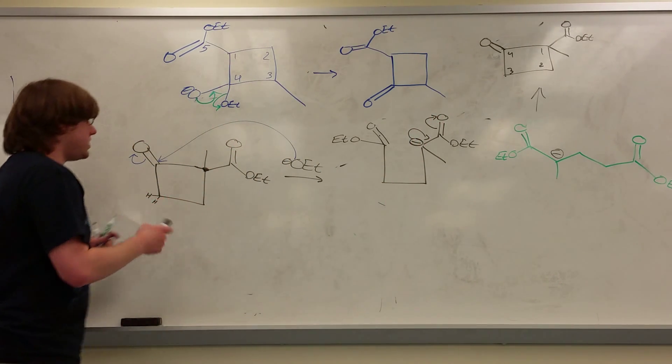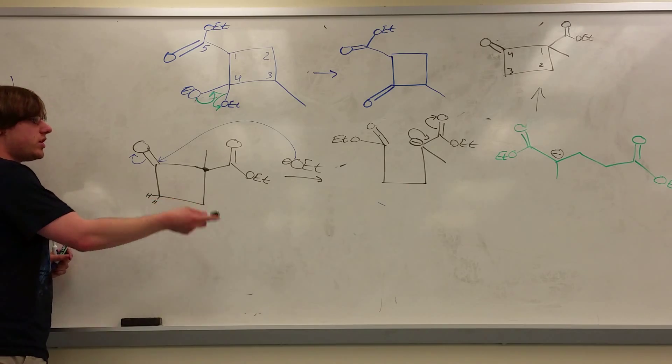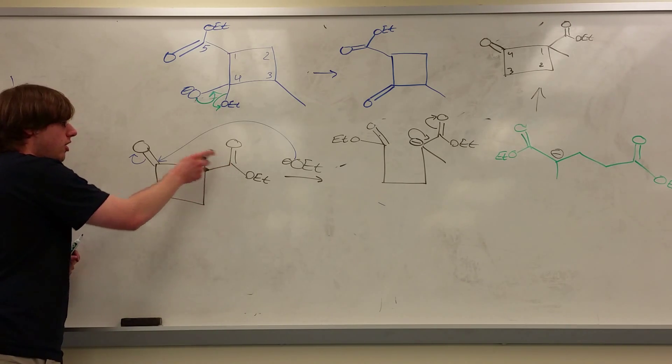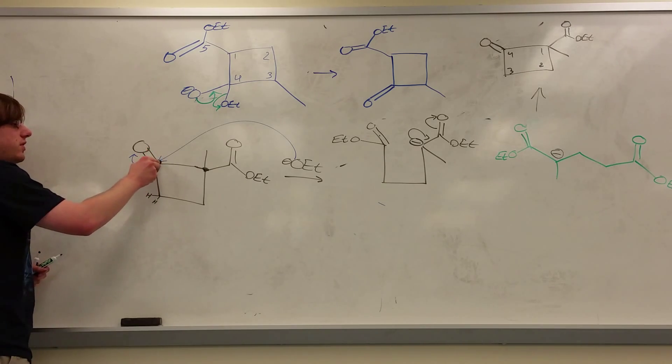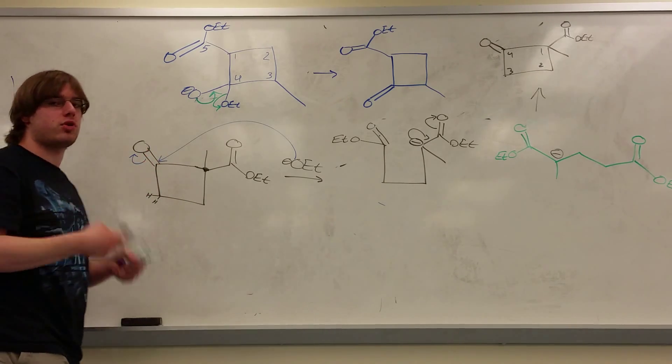And if it does that, you would end up getting this, the intermediate you formed after your first deprotonation step. Why does it do this? Because by breaking that bond, reforming the carbonyl and putting the negative charge over here, well, that negative charge is still stable because it can resonate with the oxygen.